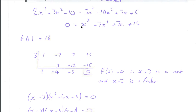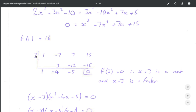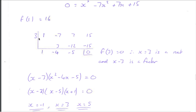Again, f of 1, substituting 1 in, I would get 1 minus 7 plus 7 plus 15, which is 16. And then I'm looking for 3, because 3 is a factor of 15. Running through the synthetic division with 3, it shows that f of 3 equals 0, so x equals 3 is a root, and x minus 3 is a factor. Make the statement.